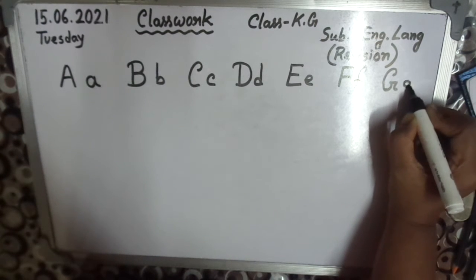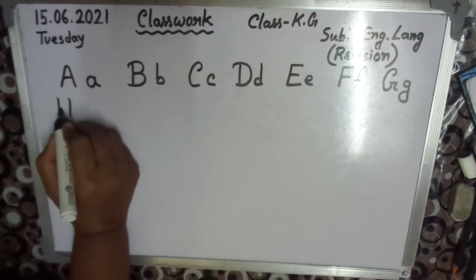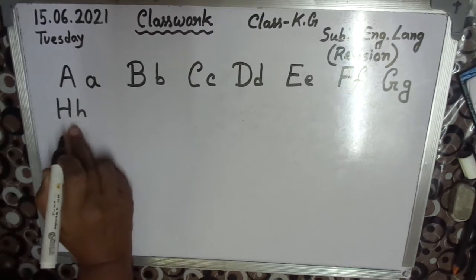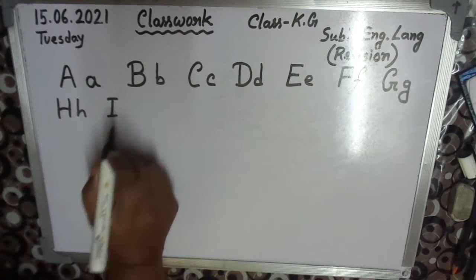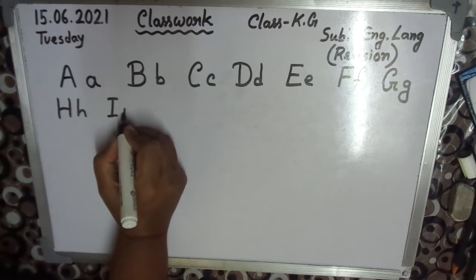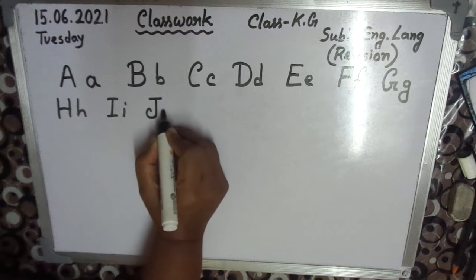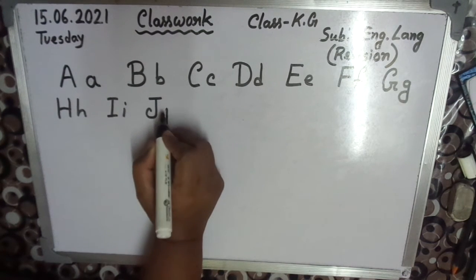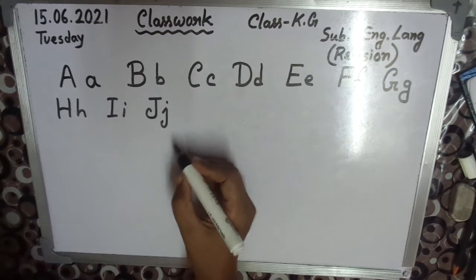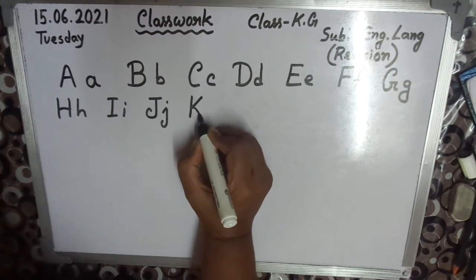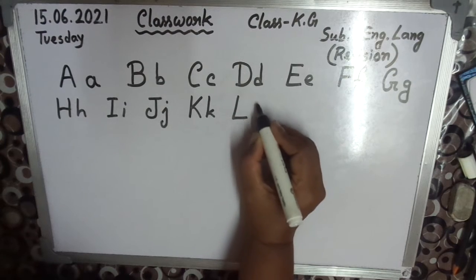G — capital G, small g. Capital H, small h. Capital I, small i. J — capital J, small j. Capital K, small k. L — capital L, small l.